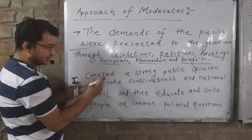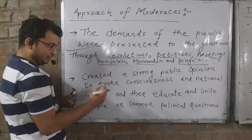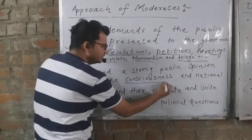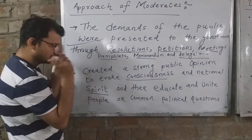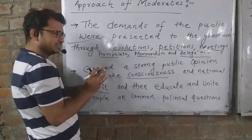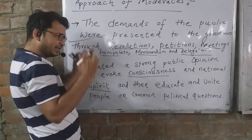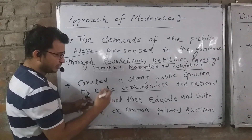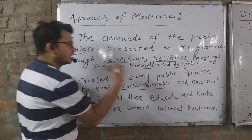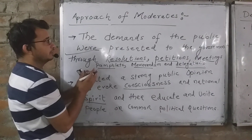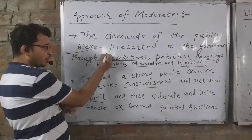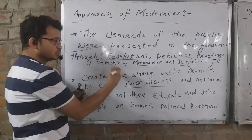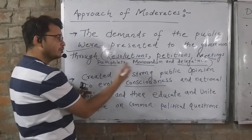Moderates wanted to educate the people and create a strong national consciousness — a national spirit that we are people of India and not working for the rulers. Through education they would raise people's demands before the government. Their methods to remember: resolutions, petitions, meetings, pamphlets, memorandums, and delegations.